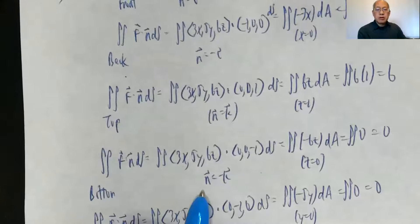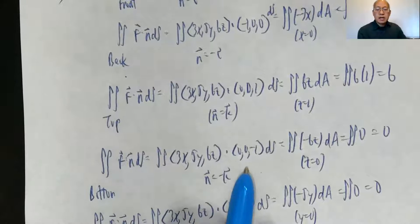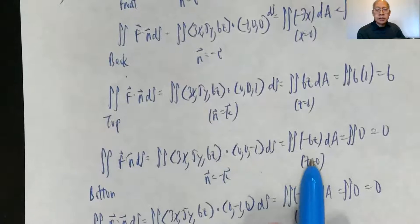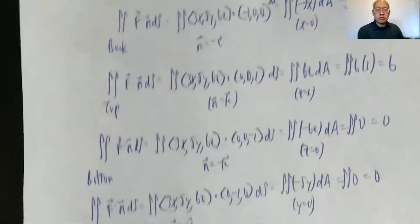Bottom: the unit normal is negative k, (0, 0, -1). So this dot product is negative 6z, but z is equal to 0 at the bottom, so I'm integrating 0 again, which is 0.